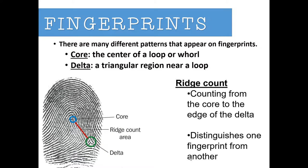We're going to talk more about minutia patterns in a future lesson, but I want to introduce them now. There are different patterns that appear on fingerprints beyond loops, whorls, and arches — we call these minutia patterns. Two specific ones I want to bring up are the core and the delta. The core is the center of a loop or whorl fingerprint, and the delta is a triangular region near a loop where fingerprint patterns merge together.